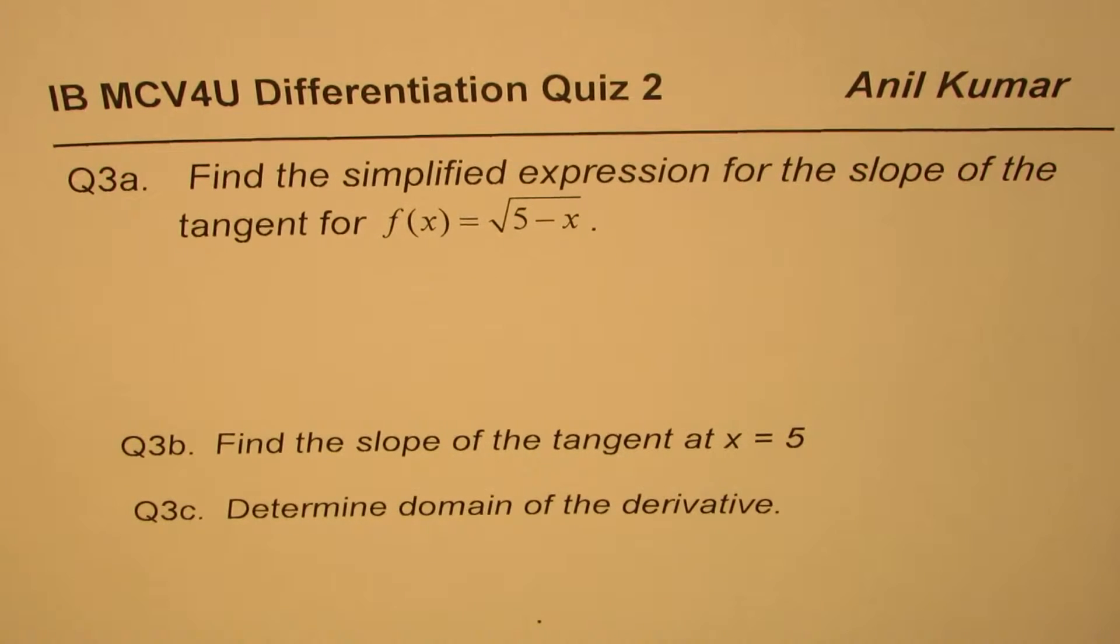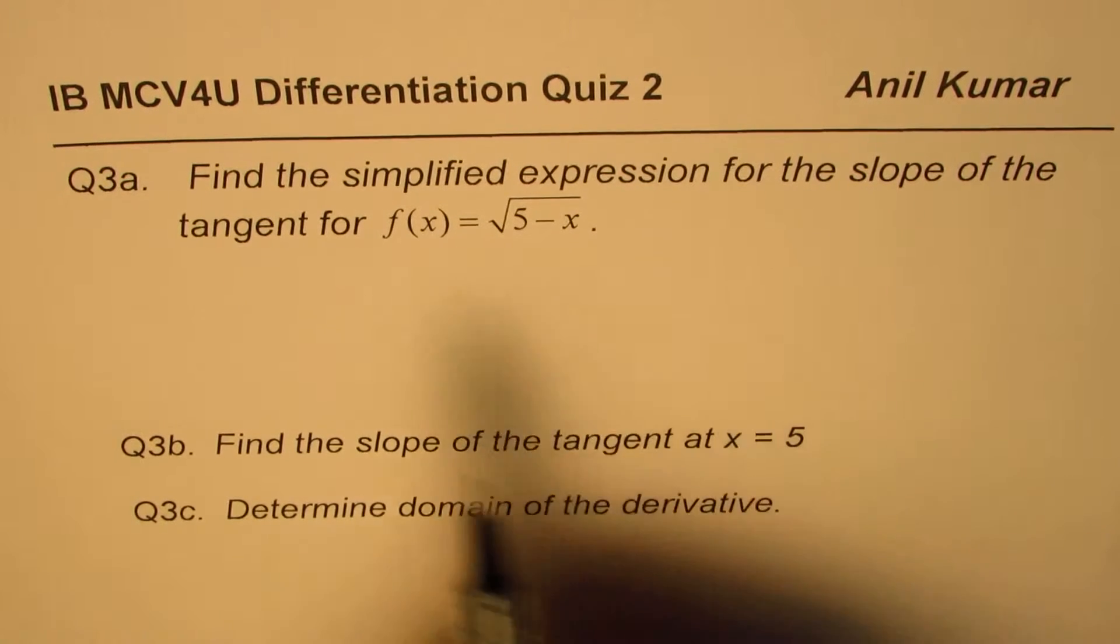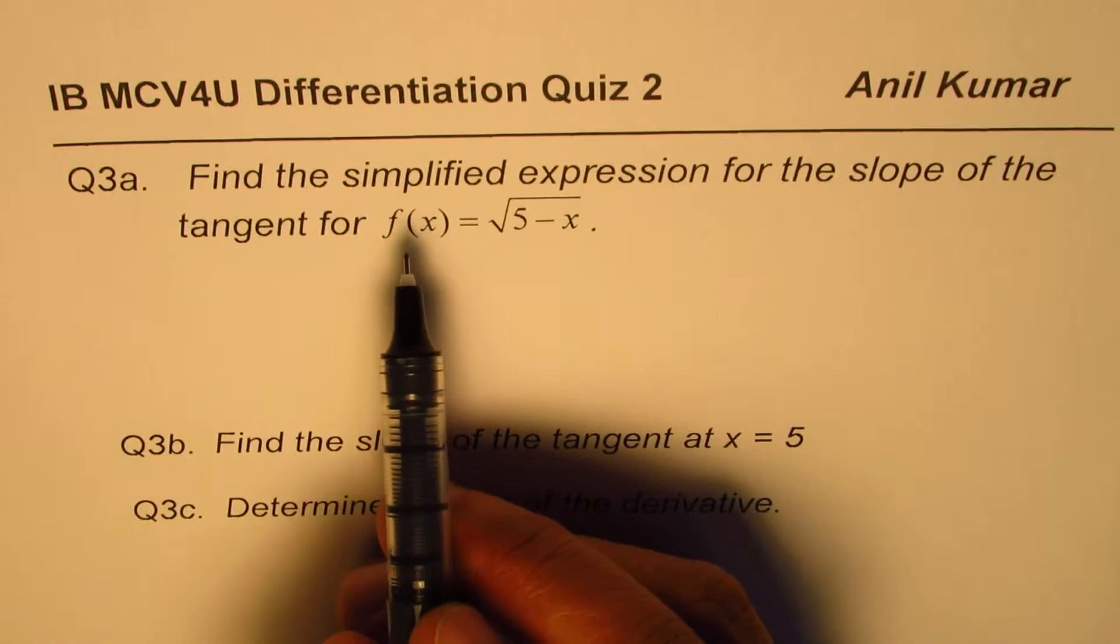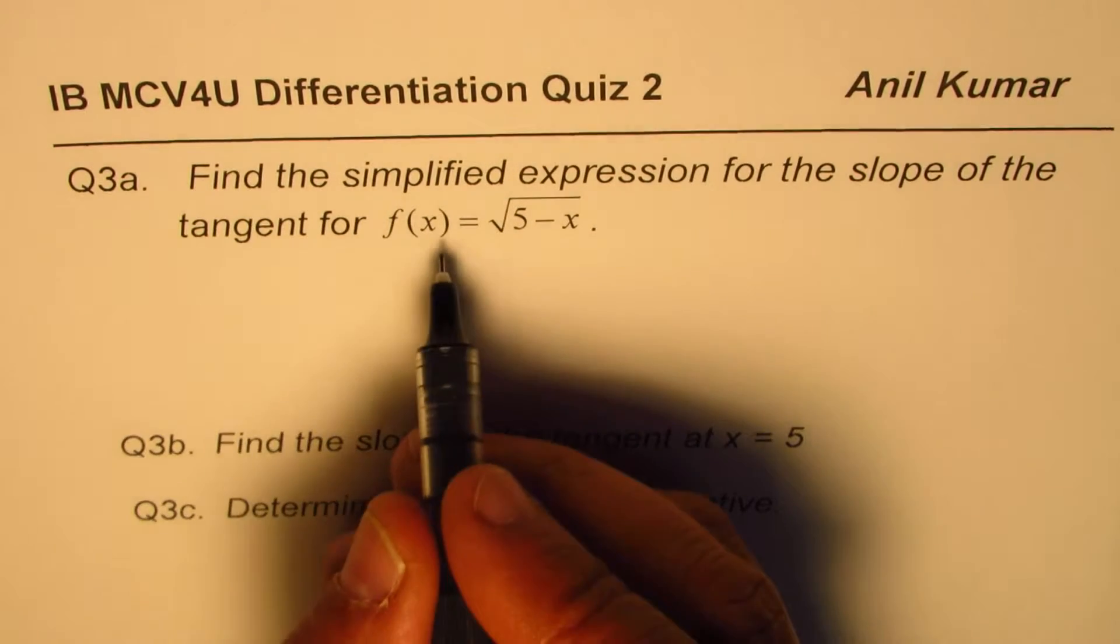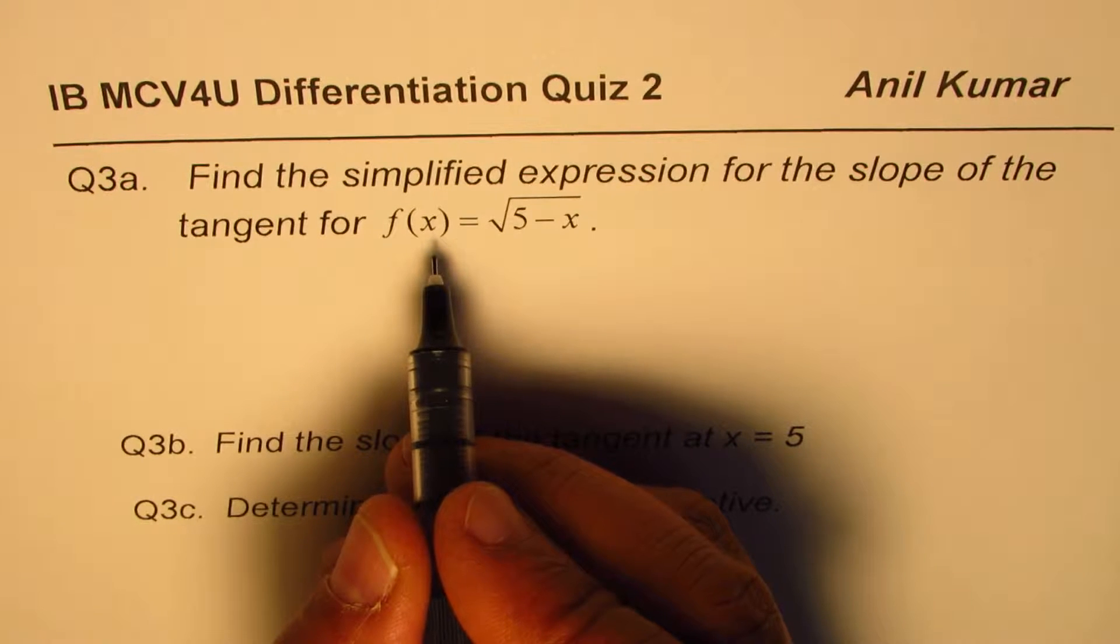So that is the question for us. Now let's look into the equation. Part A: find the simplified expression for the slope of the tangent line. That means first we should find the derivative.